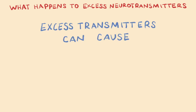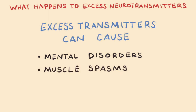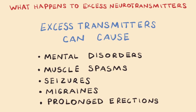For example, excesses in neurotransmitters can cause various mental disorders, such as schizophrenia, depression, and ADD. Excess neurotransmitters can also cause muscle spasms, seizures, migraines, and prolonged erections, among many other things.